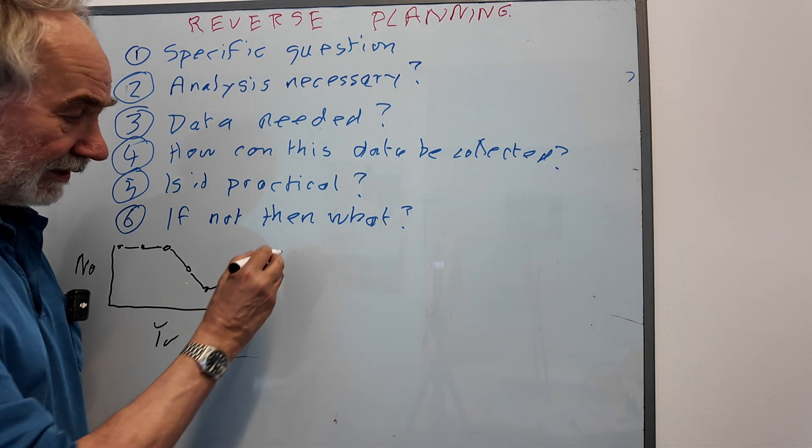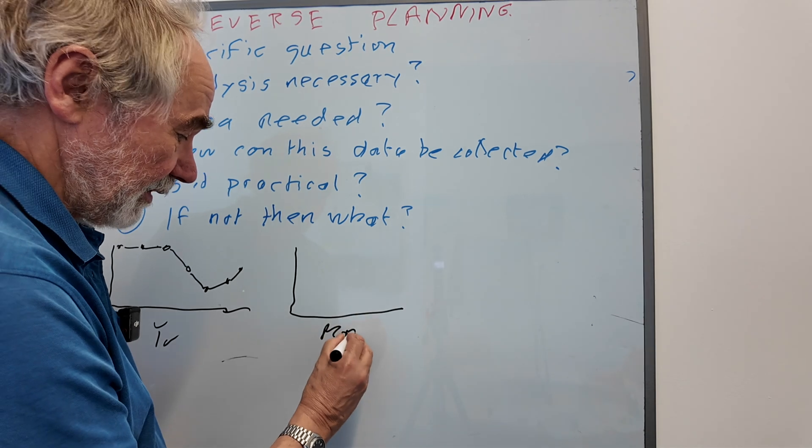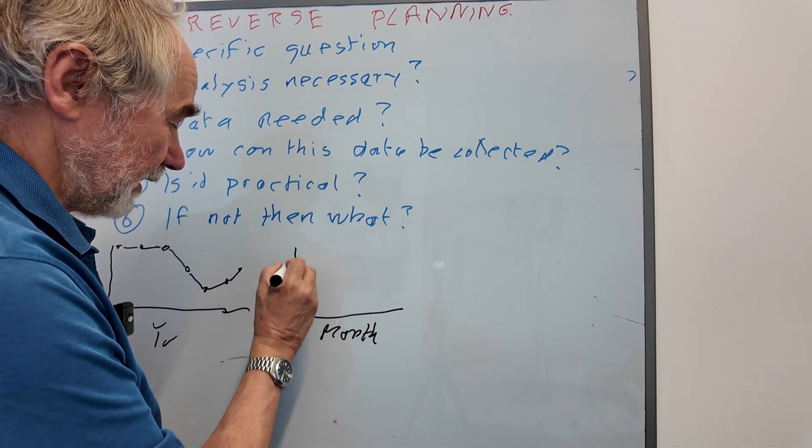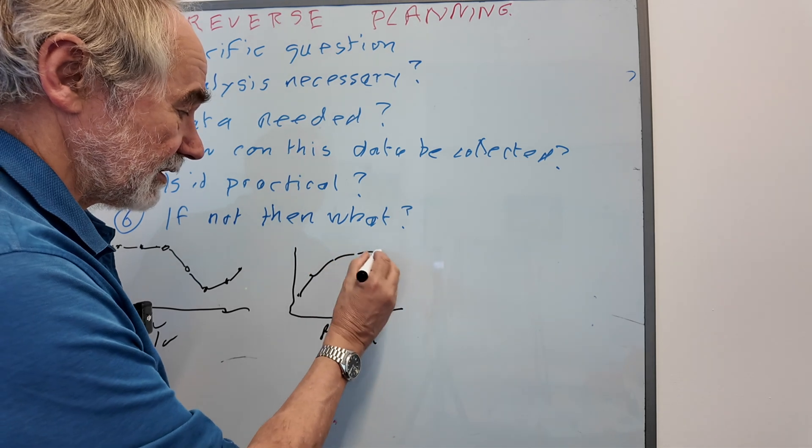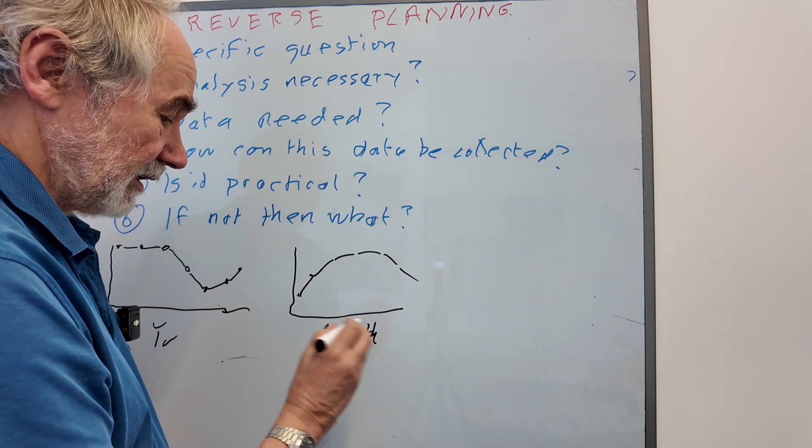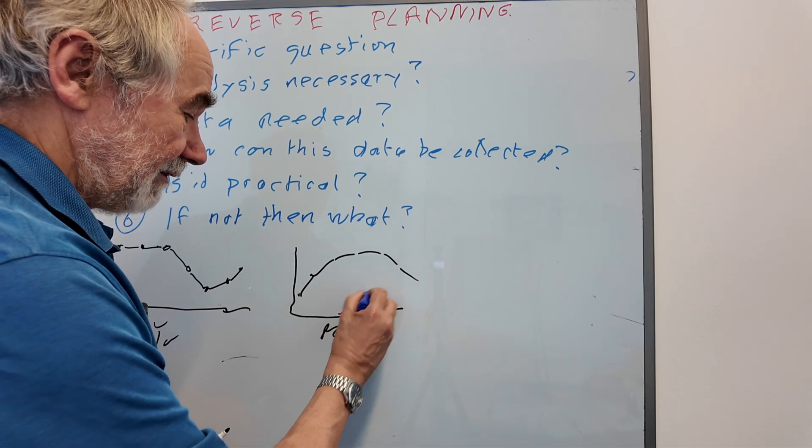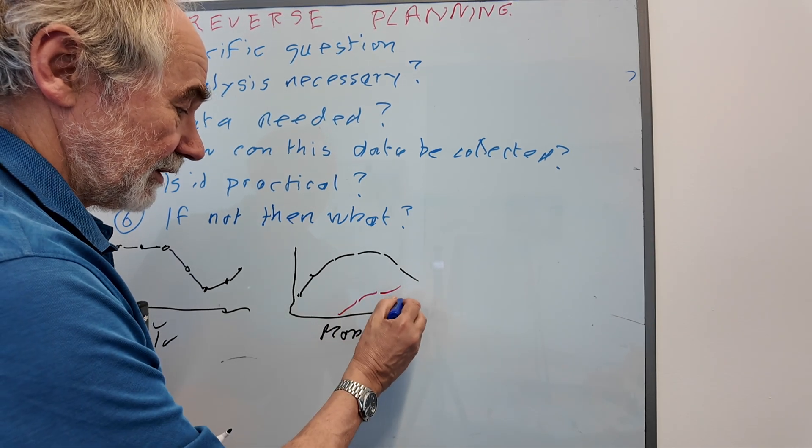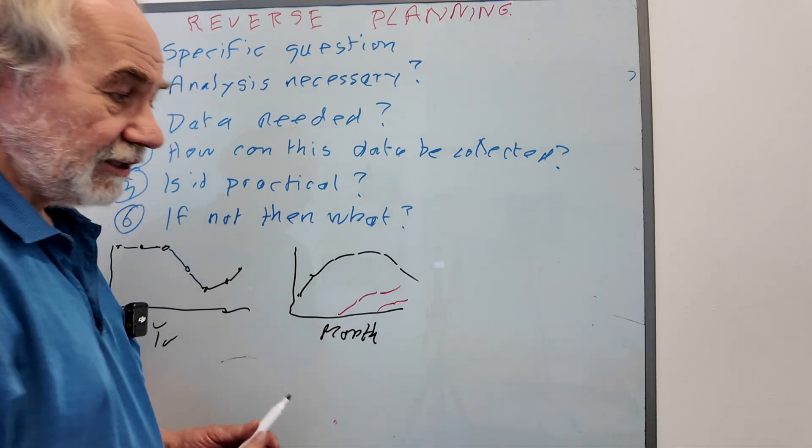Secondly, you might say, well, let's look over a season. So you do it on different months, and you look at the number of seabirds that are present in those different months, and you look at the number of seabirds that have avian flu, and you look at the number that have died.